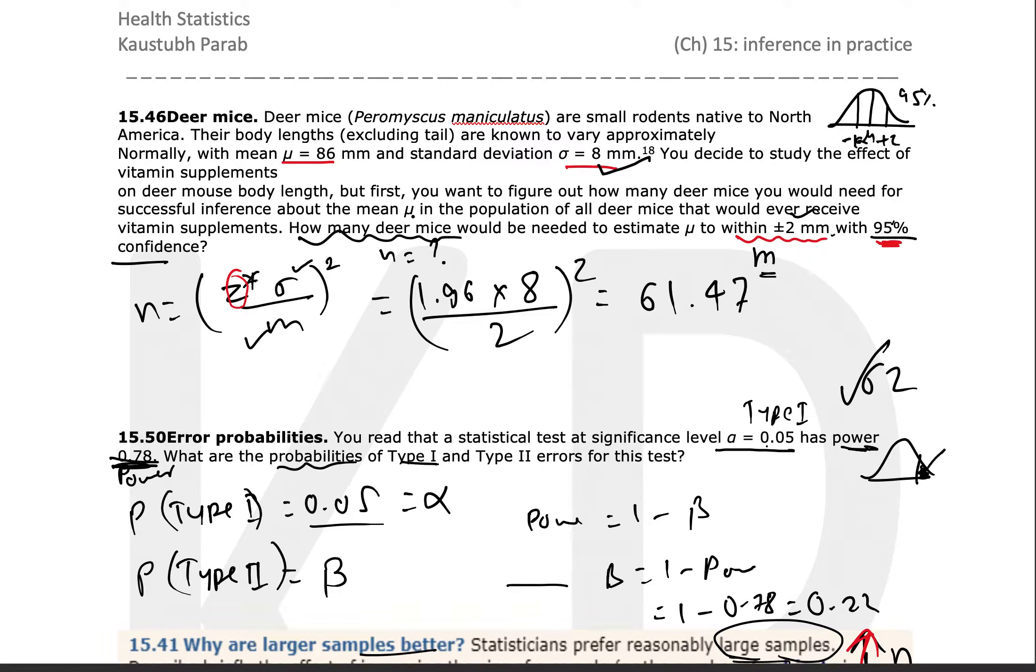So we know n equals Z times sigma over M, the entire square. We just have to substitute the values. The only thing we don't know directly in this case is Z, but we have been asked to calculate 95% confidence interval.